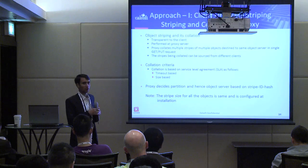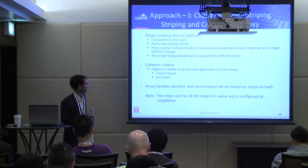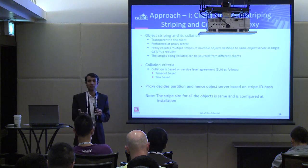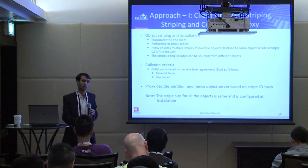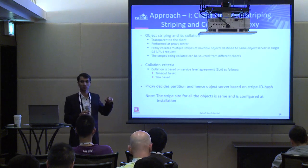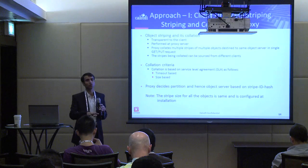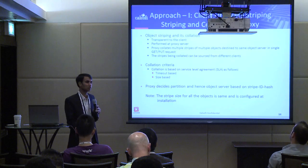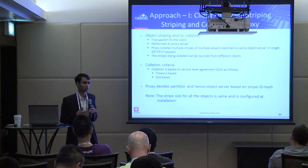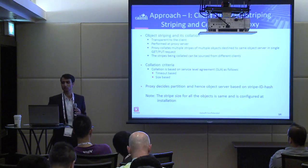In approach one, the stripe size is the same for all objects. Since striping happens at the proxy — still within the private network — the network bandwidth is known and consistent across the environment. There is no point in having different stripe sizes for different objects, as it would only complicate things. All objects are striped at the same size in approach one.